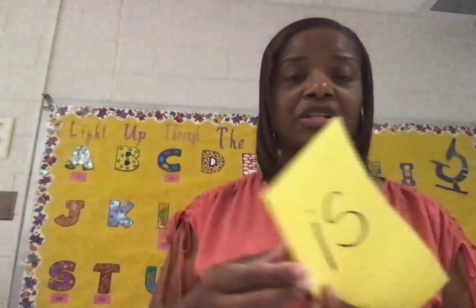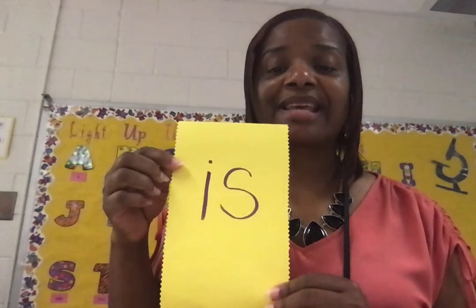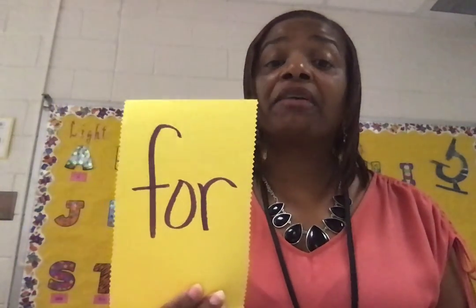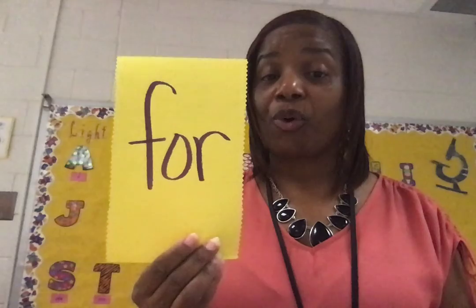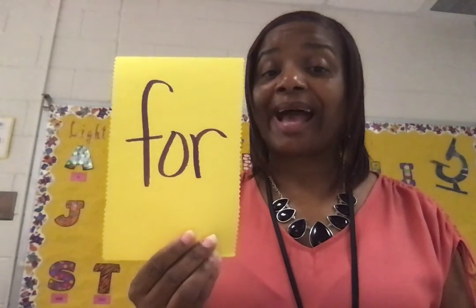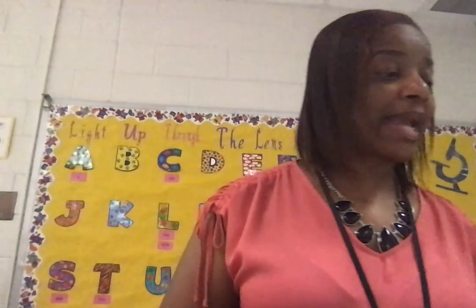But before we do, remember these two lightning words. This word right here is 'is' — I-S, is. And this word is 'for' — F-O-R, for. Not the number four, but this word for, like 'I am looking for you.' All right, so let's take a look at what you're going to be working on with this G activity today.